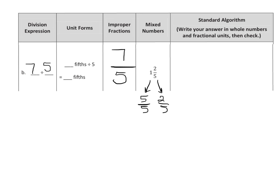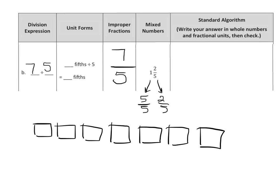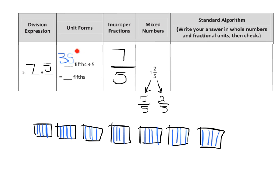Like I just showed you in the previous example, if we have 7 wholes and we cut each one of those into 5 pieces, that means we now have 35 fifths. And 35 fifths divided by 5 gives us 7 fifths. We knew that because it says so here — 7 fifths. See how all of these connections are happening? They want us to use the standard algorithm for turning the improper fraction into a mixed number.